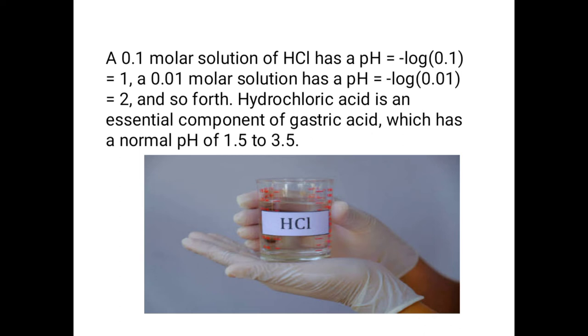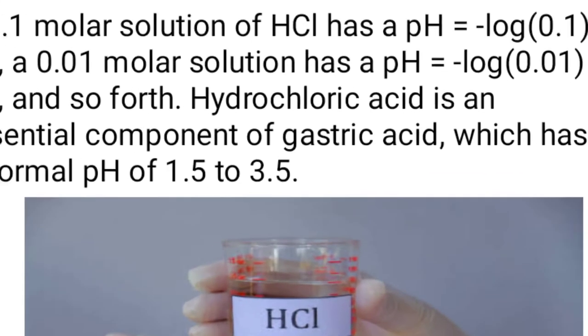Hydrochloric acid is a very strong acid because it contains a large amount of hydrogen ions. Its pH value lies between 1.5 to 3.5.